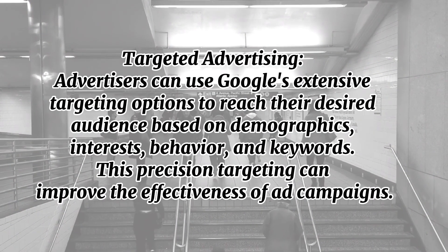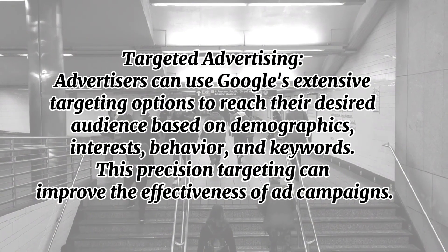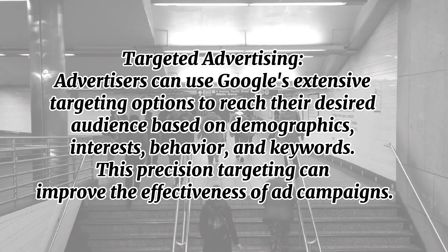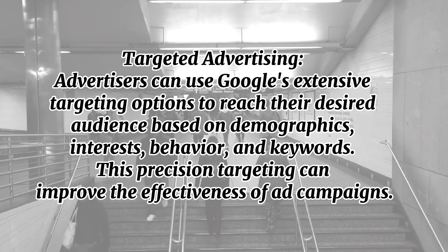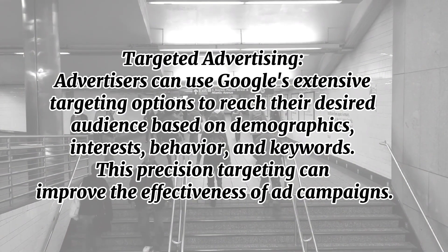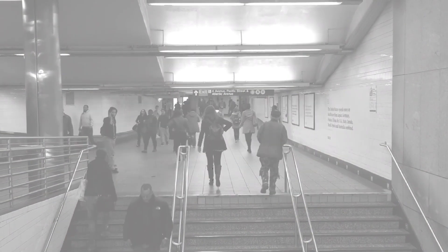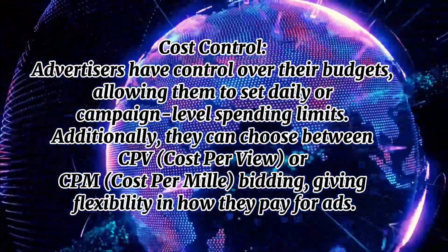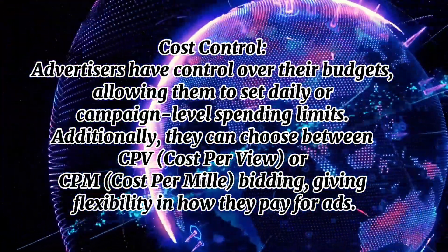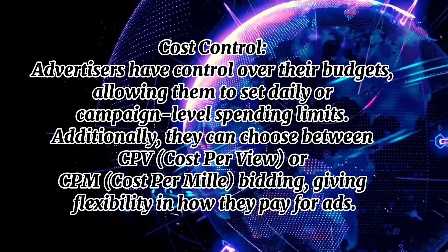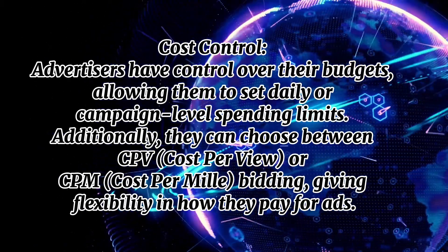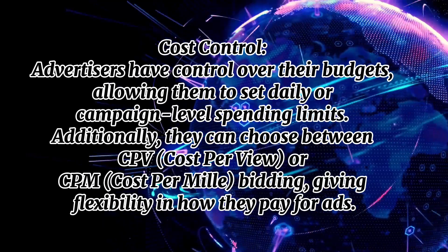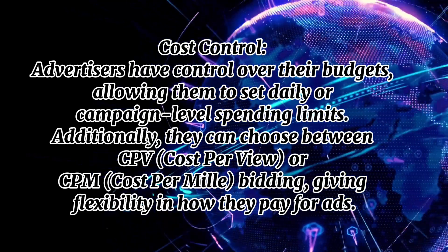Targeted advertising: advertisers can use Google's extensive targeting options to reach their desired audience based on demographics, interests, behavior, and keywords. This precision targeting can improve the effectiveness of ad campaigns. Cost control: advertisers have control over their budget, allowing them to set daily or campaign-level spending limits. They can also choose CPV or CPM bidding, giving flexibility in how they pay for ads.